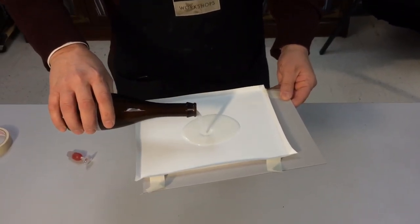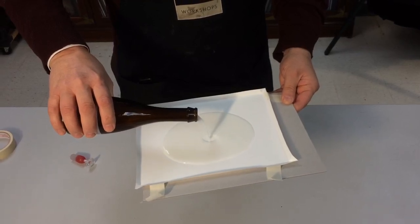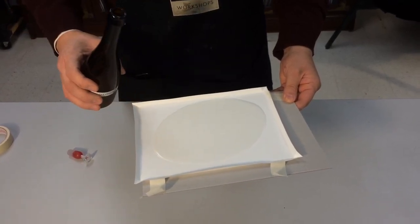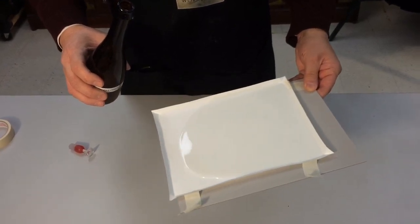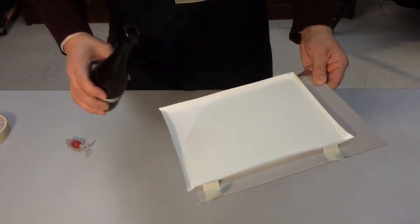Pour it in the center. Notice the color. It has both the silver and the halide combined. Go to all four corners. It's very, very easy compared to coating a glass plate. This is child's play.